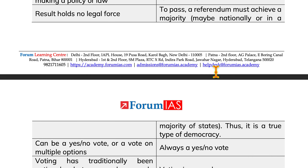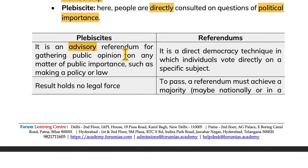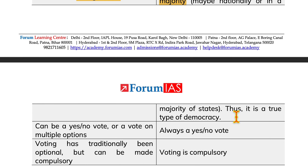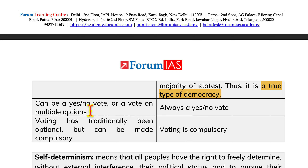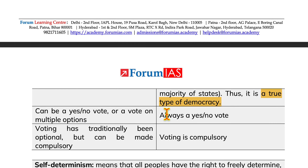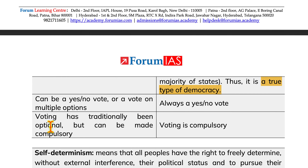Differences between plebiscite and referendum: a plebiscite is an advisory referendum for gathering public opinion on any matter of public importance such as making policy or law, while referendums are direct democracy techniques in which individuals vote directly on a specific subject. In plebiscite, results hold no legal force; in referendums, a majority must be achieved to pass. A plebiscite can be a yes/no vote or a vote on multiple options, while a referendum is always a yes or no vote. Voting in plebiscite has traditionally been optional but can be made compulsory; in a referendum, voting is compulsory.